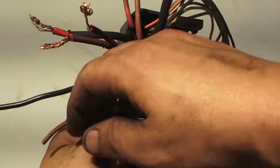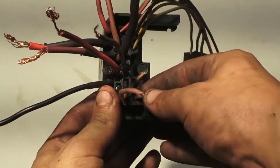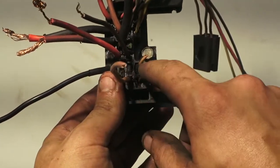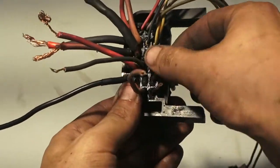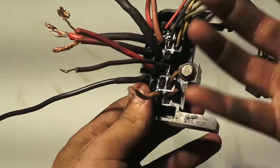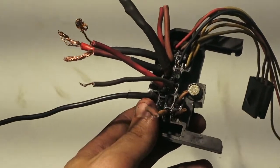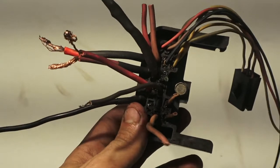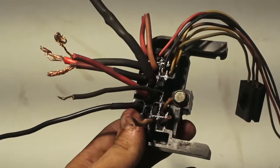These two here I'm unsure of, I cannot remember what these go to. But I do know this green wire right here, what's left of it anyways, that's your other factory gauge wiring for your temperatures or your temp gauge or whatever.